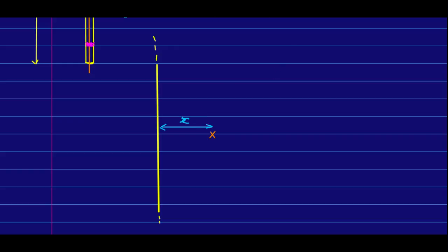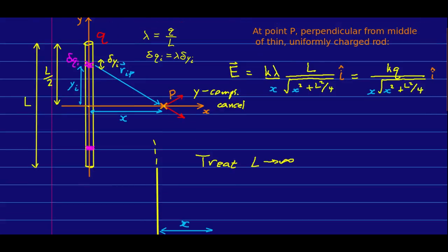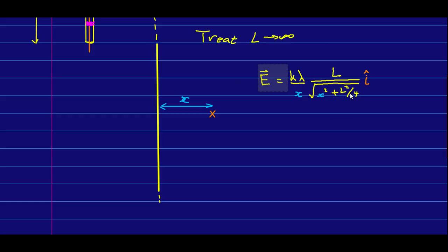Well, in that case, we can treat the length as infinite. And so, we can take the expression that we already have, and we can think of what this expression does as L gets very large. Well, in particular, as L gets very large, x squared plus L squared over 4 is going to go to, well, L is much bigger than x, and so this is just going to go to L squared over 4.